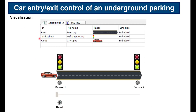Here you can see the visualization I created. I have an image pool with three images: the road, the traffic light, and the car. I have placed two sensors — sensor one and sensor two — to simulate the car entering or exiting the passage. I also have a slider to determine the location of the car; as I move the slider manually the car moves on the road. There is also a reset switch.